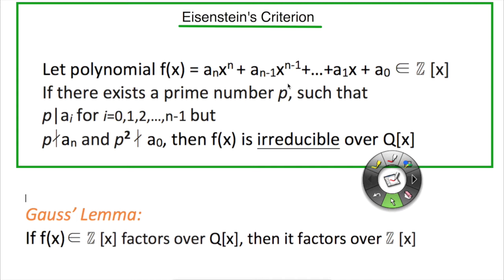And the second condition is the prime number p does not divide the leading term coefficient a_n, and p squared does not divide the constant term a_0. And when these three conditions are satisfied, we can conclude f(x) is in fact irreducible over the rational polynomial ring Q[x].